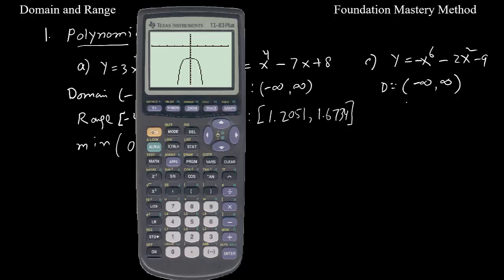Find that max point: second, trace, maximum is 4. Keep your left bound, then the right bound, one more time. So you can see this one when you select it is actually 0, and y is negative 9.